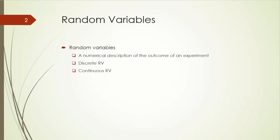Let's officially define the concept of random variable first. A random variable is simply a numerical description of the outcome of an experiment. If a random variable may assume a finite number of values or an infinite sequence of values, it is a discrete random variable. Technically, it means the number of experimental outcomes is countable. For example, let random variable X be the number resulted from rolling a die.